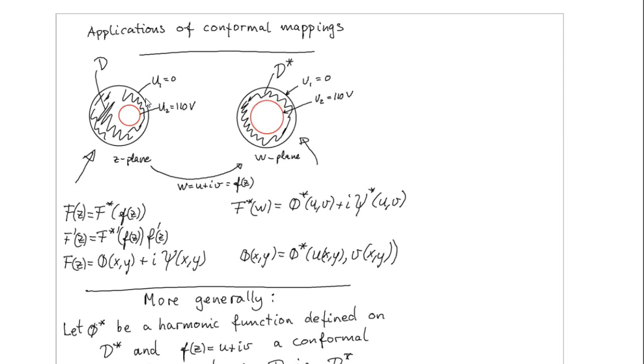And let's assume that we can map these circles onto the new circles here, and we could have the same boundary conditions on the mapped circle as we have on the original circles.